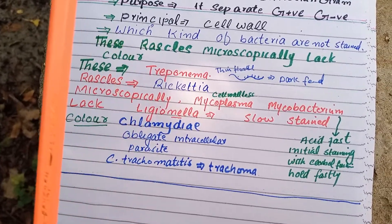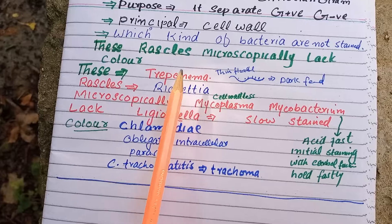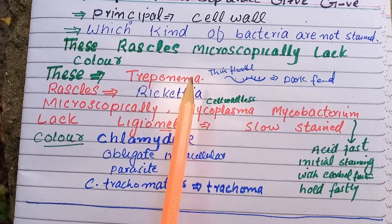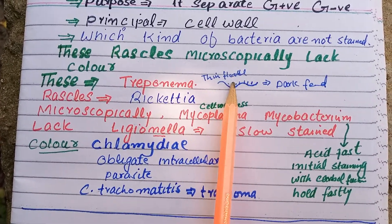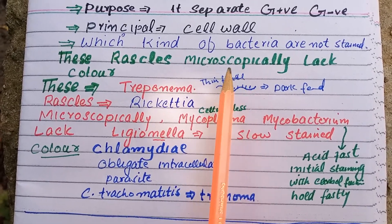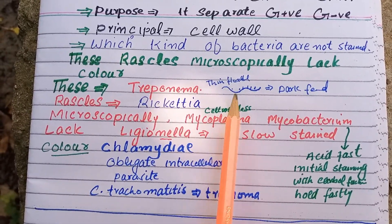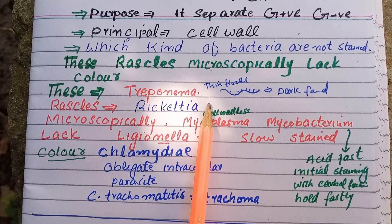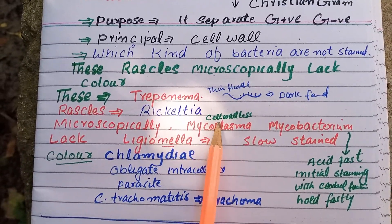Why are these bacteria not stained? The first one is Treponema. Treponema are not stained because Treponema is a thin, flexible spirochete — it is so thin that we cannot stain it. We can use dark field microscopy for Treponema.